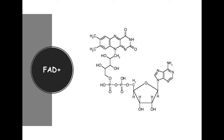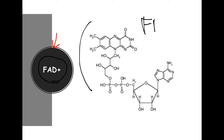This is another key player I want to introduce — the other electron carrier, FAD. FAD is not found in all other parts like NAD, which pops up everywhere. When FAD becomes reduced, it becomes FADH2 — that would be the reduced form. We find FAD primarily in the Krebs cycle, and we'll talk about it a little bit later.